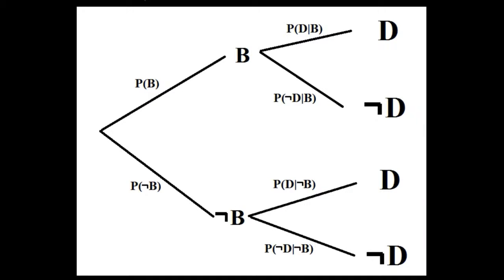From our Bayes Rule example, we are trying to determine the probability that we have the new machine, B, given that we have a defective Frisbee, D. So we're trying to determine the probability of B given D. We know that we have a defective Frisbee, so we do not have to worry about having a not defective or a good Frisbee.